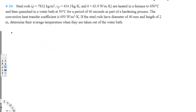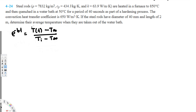The lumped system analysis equation is: e to the power of negative b·t equals (T(t) minus T∞) over (T_initial minus T∞). So T(t) is the temperature at time t, T∞ is the ambient temperature, and T_initial is the initial temperature. T(t) is what we are trying to find. However, before we use this equation, we first have to verify whether this is a valid lumped system.